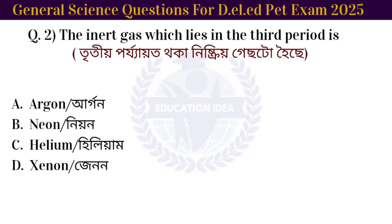Next question: the inert gas which lies in the third period is Argon.